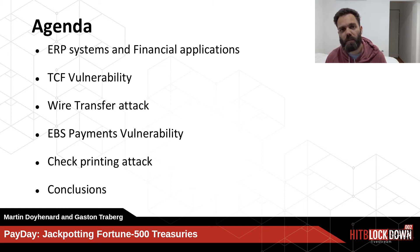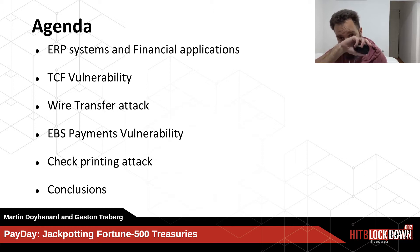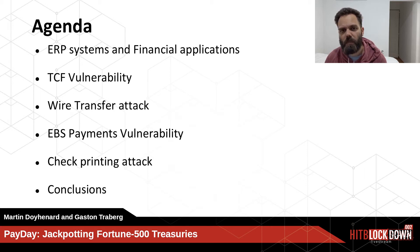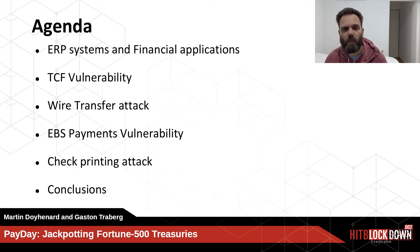This talk will be divided into six different parts. In the first one, we will talk about what an ERP is and how financial applications work. Then Martin will present a CCF vulnerability he found and use it to make a wire transfer. Then I will present the EBS payment vulnerability I found and use it to make a check printing attack. Finally, we will present conclusions of all this research.